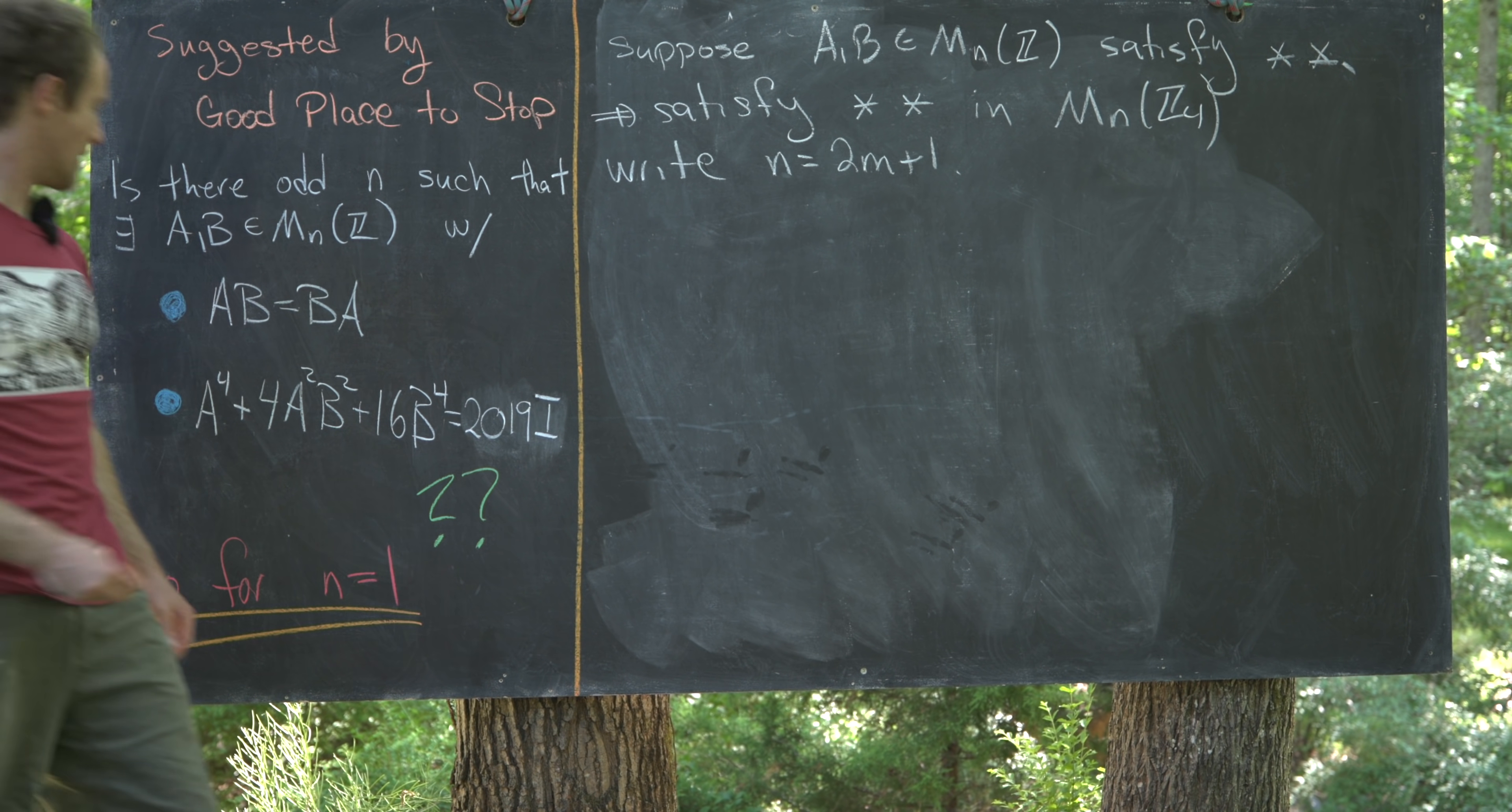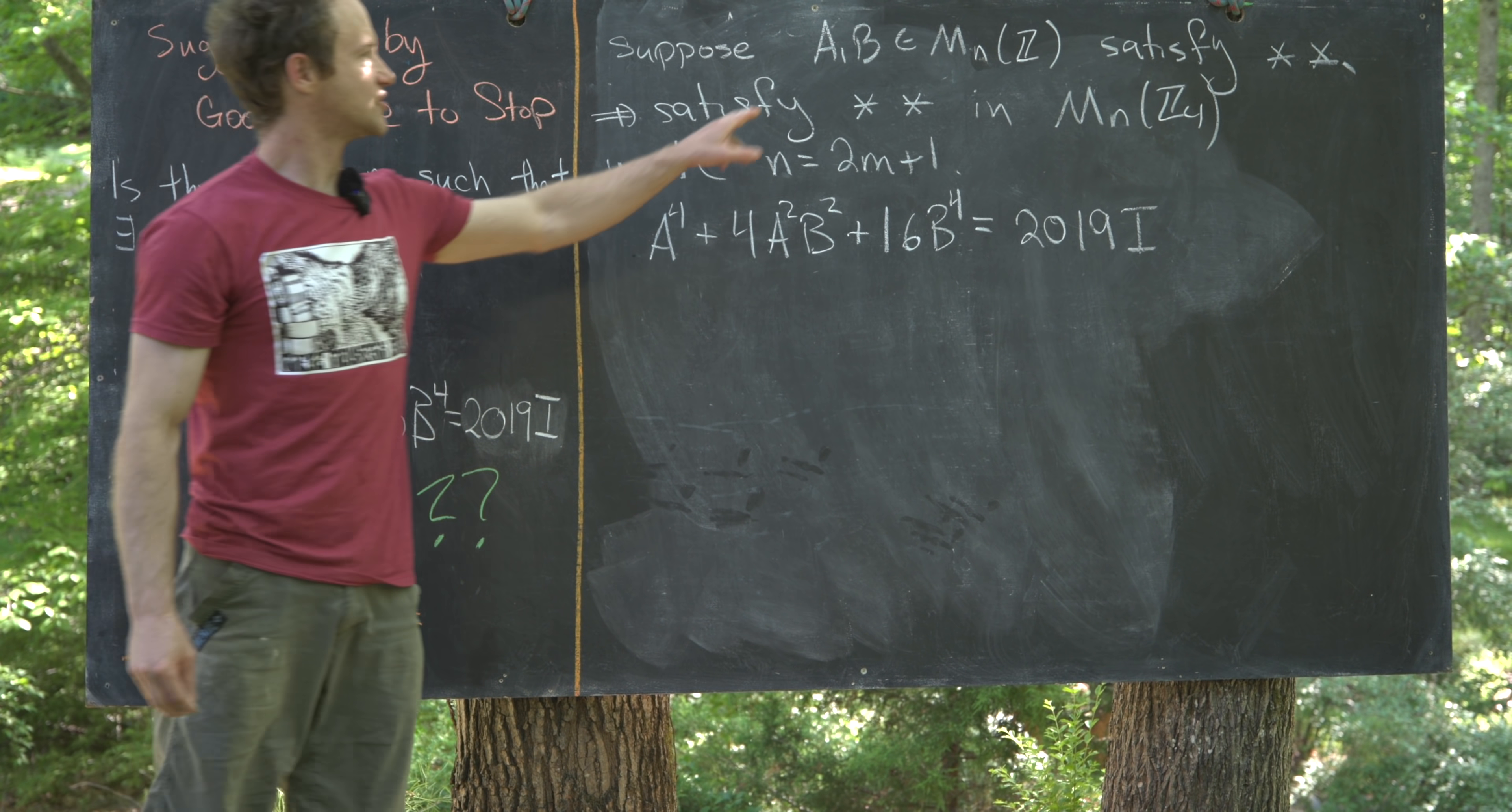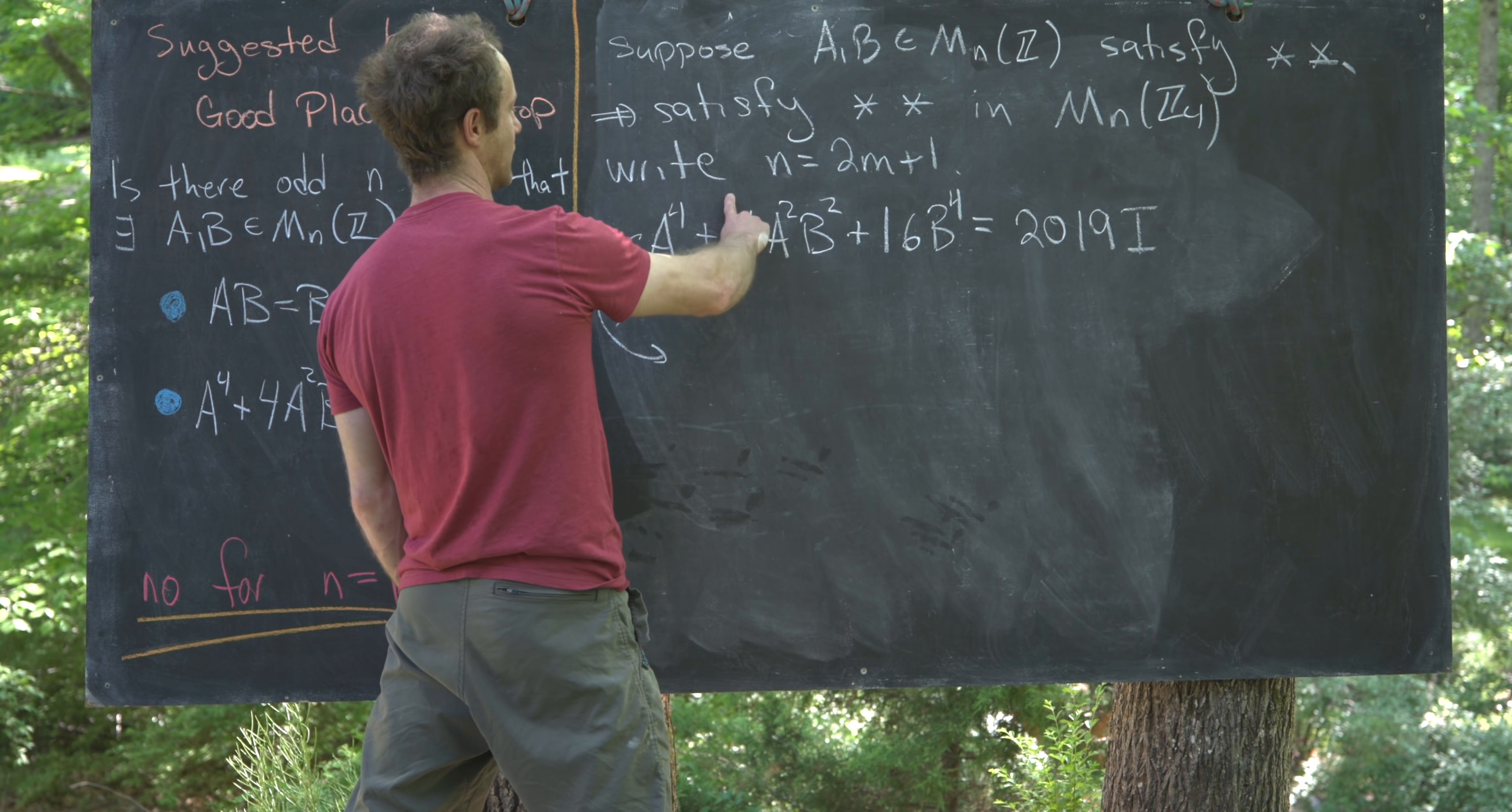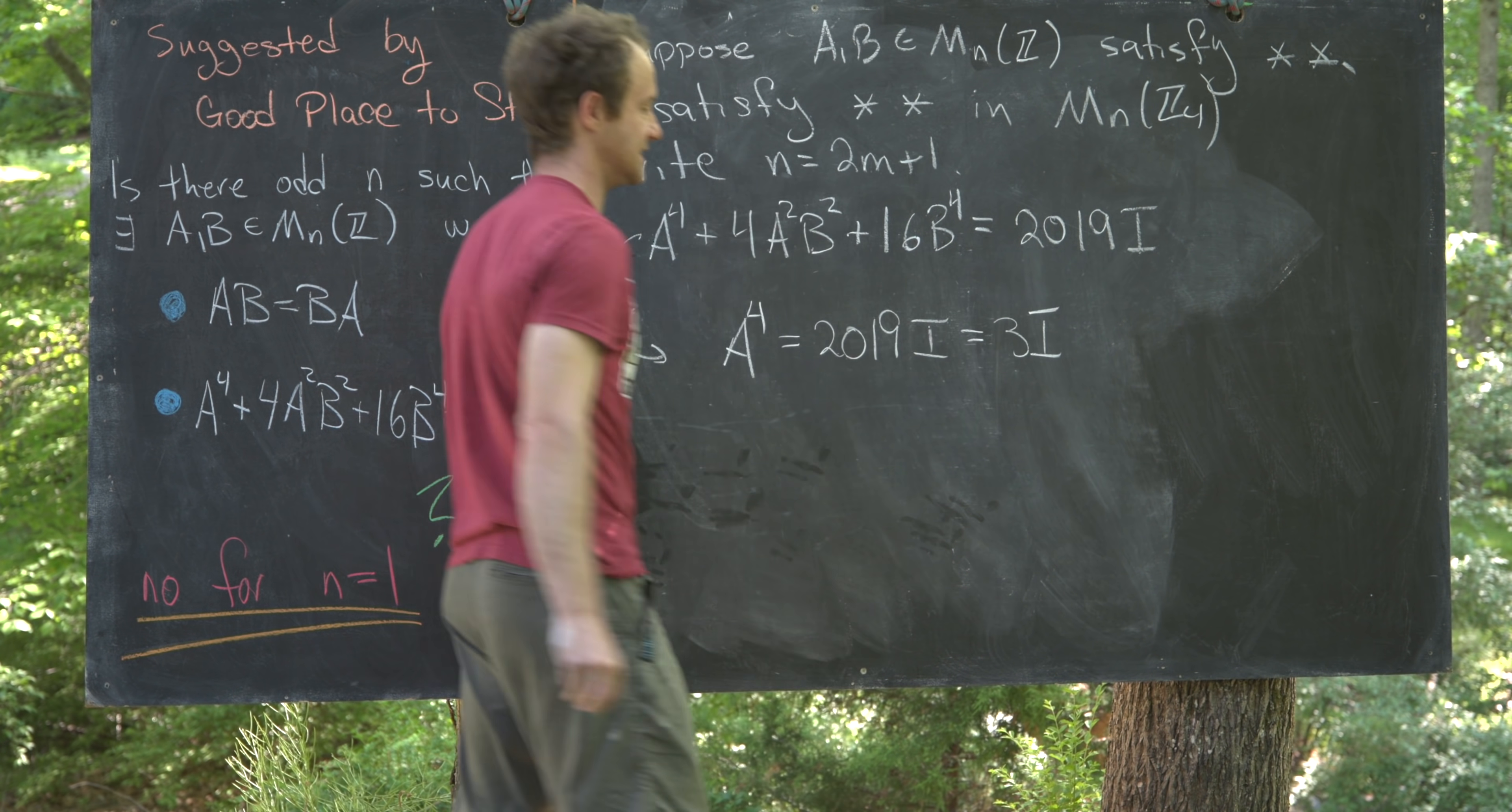Okay, so now let's write down our equation. So, we've got A to the 4th plus 4A squared B squared plus 16B to the 4th equals 2019I. So, that's the equation in M_n(Z). But now, in M_n(Z4), we can make the following simplifications. So, notice this guy is going to become 0 because we've got a multiple of 4 here. This guy is going to become 0 because 16 is a multiple of 4. So, we have A to the 4th is equal to 2019 times the identity matrix. But, in Z4, that's equal to 3 times the identity matrix.